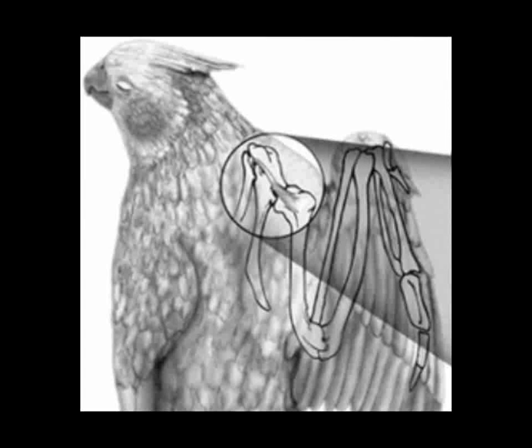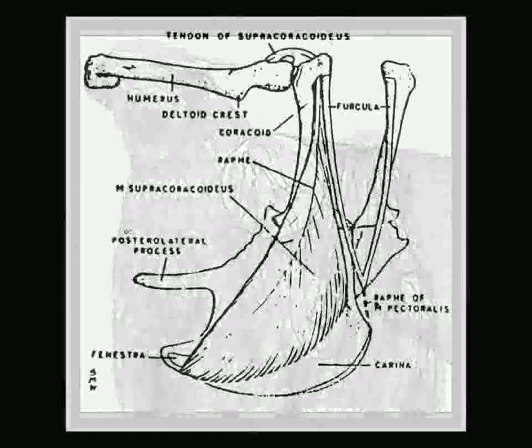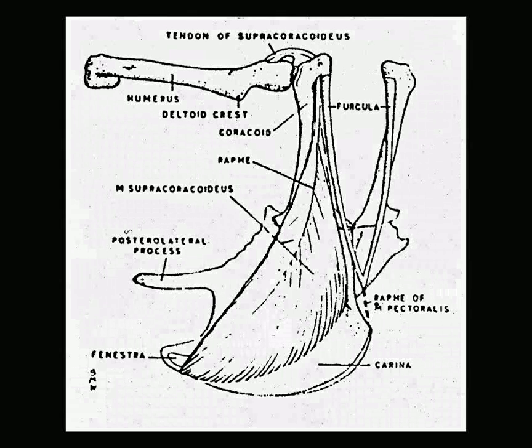Another fantastic example of an organism evolving under evolutionary constraints is the suprachorocordius tendon found in birds, which is responsible for the upstroke of the wings. Think about it from an evolutionary perspective: this organism has to evolve something which will allow the wing to upstroke, to get back, so it's able to repeat the power stroke and fly.